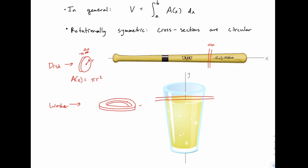A wooden baseball bat has material all the way through, so it's solid disks. But a metal baseball bat would have hollow space in the middle, so it would be more like washers when sliced. The washer also differs in that its thickness is a small change in y — delta y instead of delta x — specifically because of the direction of rotation. The cup is oriented about the y-axis, so you slice it across the y-axis of symmetry. The area function is now a function of y, depending on the y-value where we slice it.